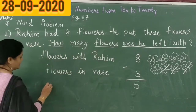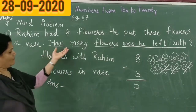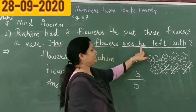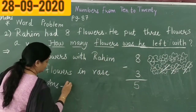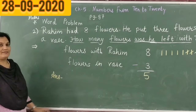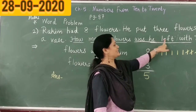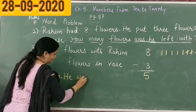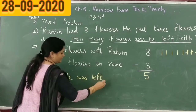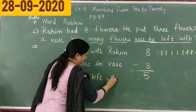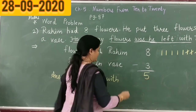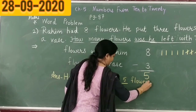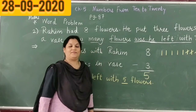So what we have to write? The answer is, how many flowers was he left with? From here we have to write he was left with 5 flowers. So we have 5 flowers. Thank you.